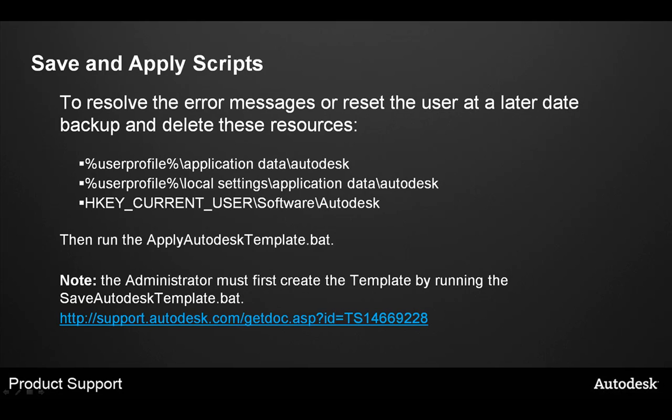You can reset the user by deleting two folders and a registry entry. The first folder to delete is in their user profile under Application Data — delete the Autodesk folder. The next one is Local Settings\Application Data — delete the Autodesk folder. Finally, in the registry, delete HKEY_CURRENT_USER\Software\Autodesk. When these three resources are deleted, you can run the apply_Autodesk_template.bat. It looks for the existence of the user profile Application Data Autodesk folder; if it does not exist, it uses the template created by the administrator to recreate those three resources.